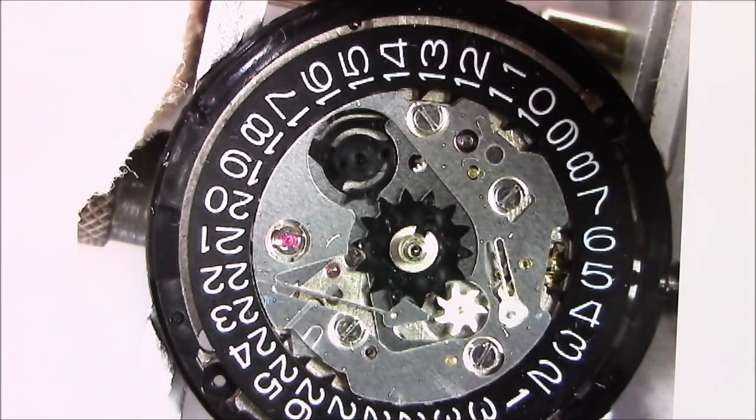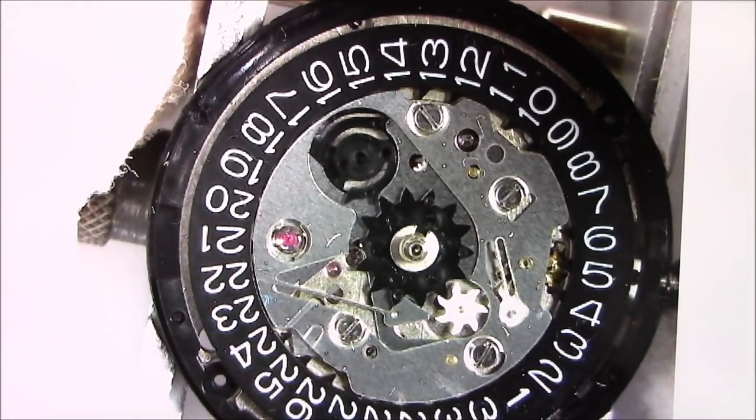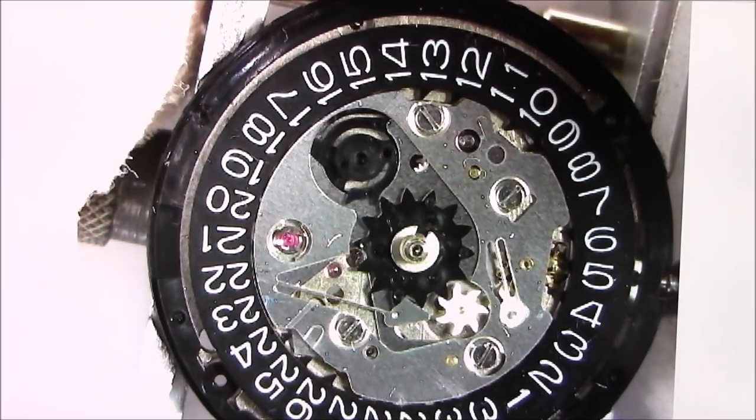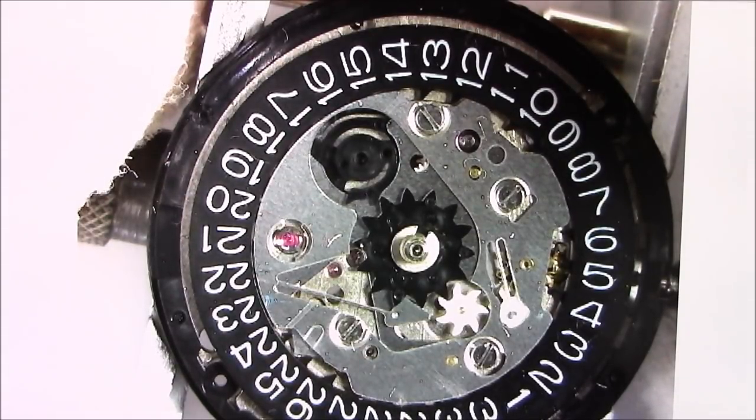And it does that twice because, again, it's a two-language wheel. It flips to the alternate language first, and then it goes back to the original language. If it doesn't look like that center wheel is moving, it is. It just moves so fast.